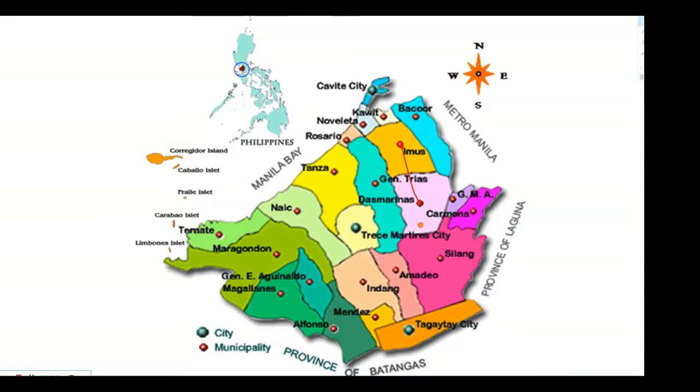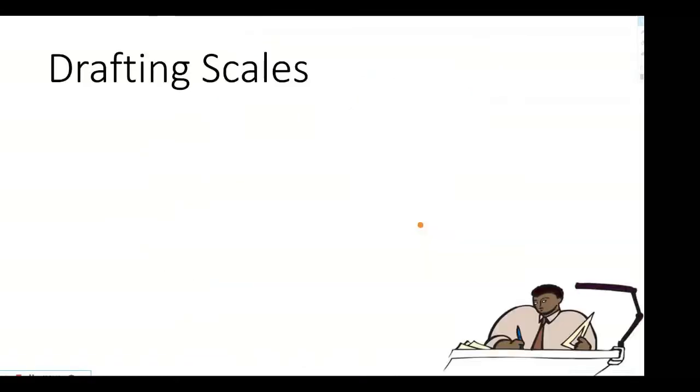But in reality, it's still equivalent to the measurement. We can't see in this map exactly what scale was used, but for sure the scale used is appropriate to the equivalent or the true distance between Dasmarinas and Imus.